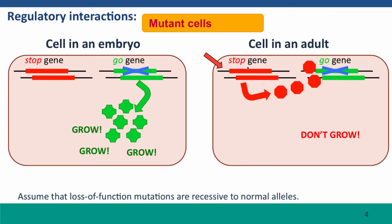What about mutations in the go gene? In the embryo, the go gene is on, but there's still one functional copy. So if we assume that loss-of-function mutations are recessive, the cell will grow normally. If having not enough protein actually produces slightly slower growth, this cell might grow more slowly. In the adult, the go gene is turned off by the stop gene, so the cell isn't going to grow anyway. It doesn't matter what the genotype of the go gene is under conditions where that gene is not expressed.